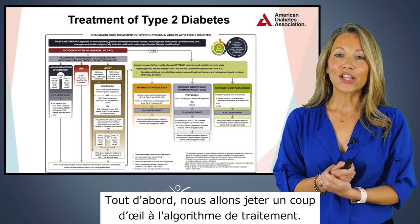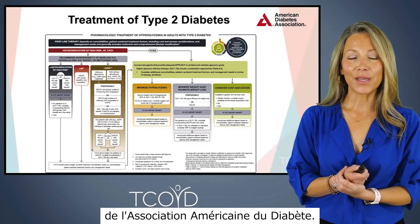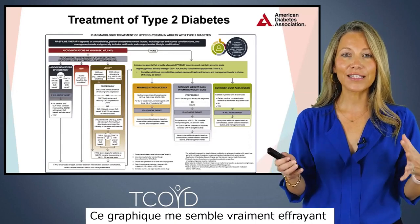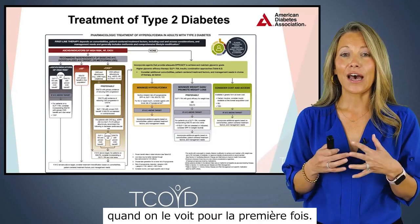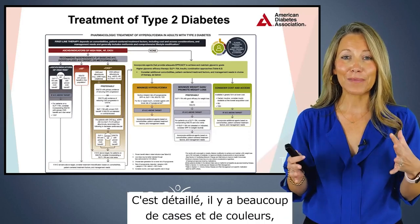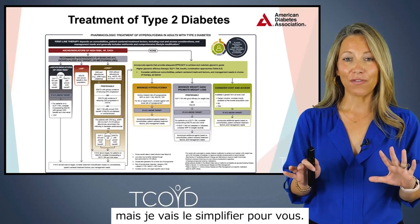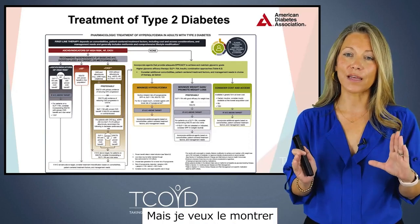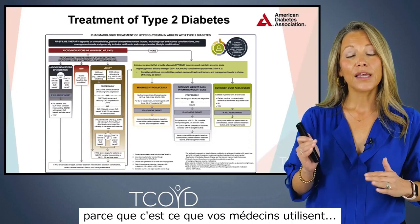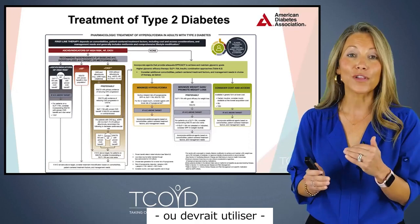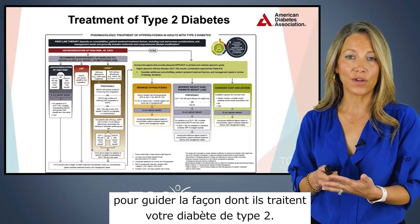We're going to take a look at the treatment algorithm from the American Diabetes Association. This graph looks really scary when you first see it — it's detailed with lots of boxes and colors — but I'm going to simplify it for you. I want to put this up here because this is what your healthcare providers are hopefully using to guide your treatment for type 2 diabetes.